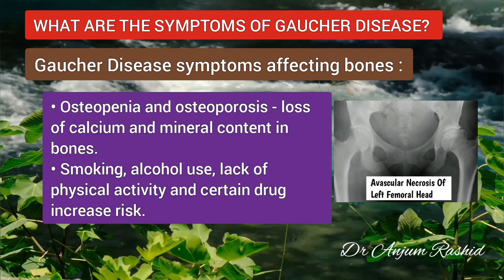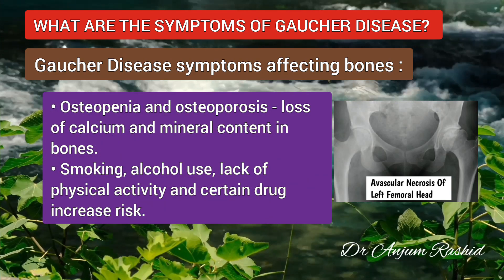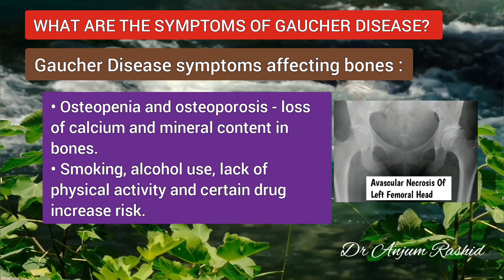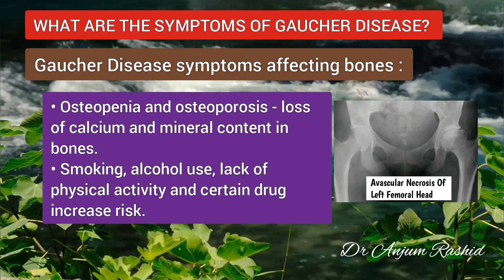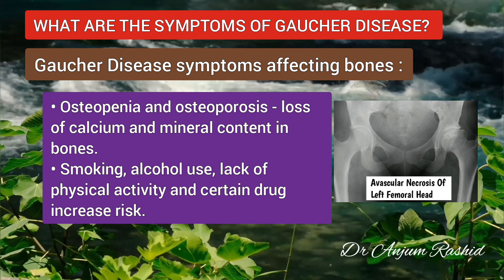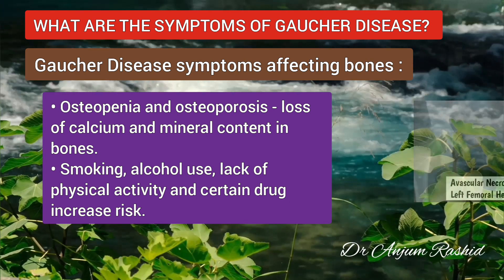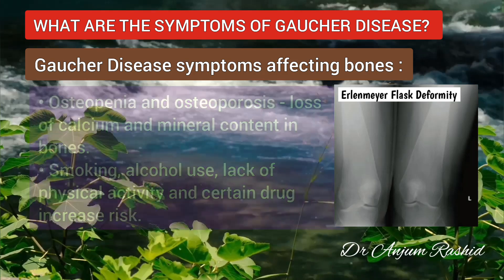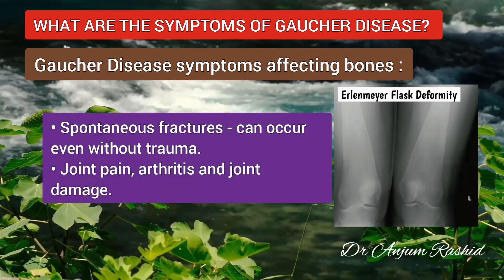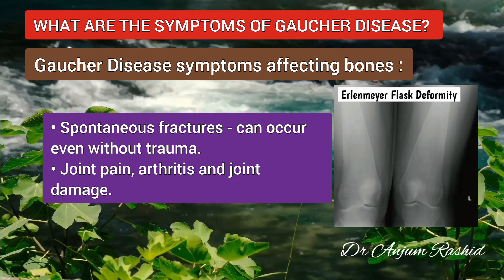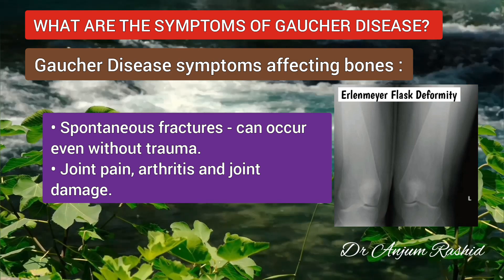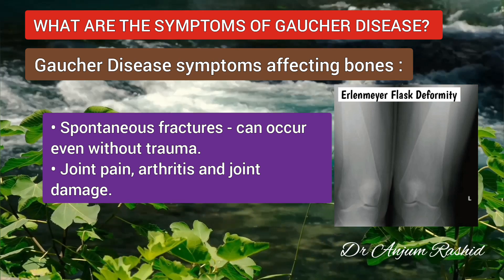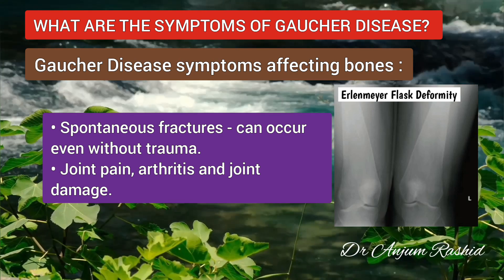Osteopenia and osteoporosis are also associated with Gaucher disease, which causes loss of calcium and mineral content in the bones in male and female patients of all ages. Smoking, excessive alcohol use, lack of physical activity and certain medications can add to the risk of osteoporosis. Osteopenia and osteoporosis weaken the bones, making them more likely to break, and bone fractures in patients with Gaucher disease can occur even without trauma.